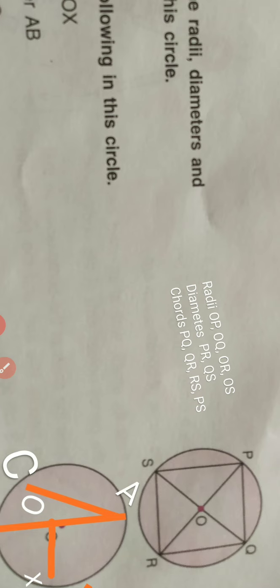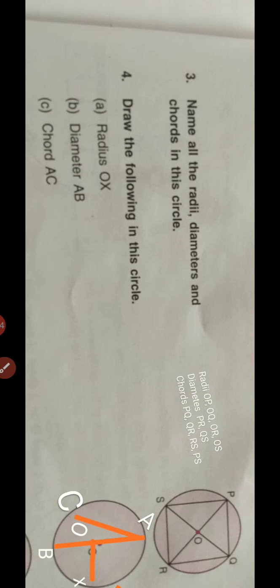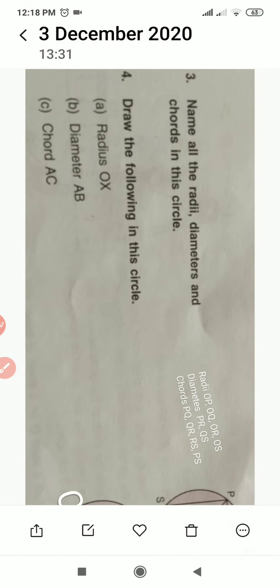So, you can also write PR and QS in this question. PR and QS are also chords here. Okay. There are six chords, two diameters, and four radii.